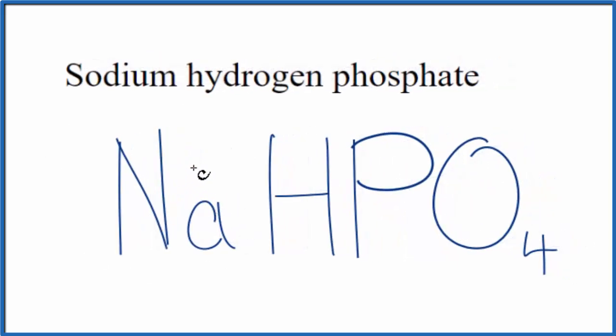So sodium is a metal and this hydrogen phosphate is a group of nonmetals. So we have metal and some nonmetals. This is an ionic compound. We need to take charge into account when we write the formula here.